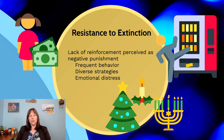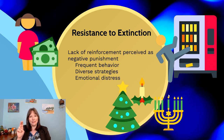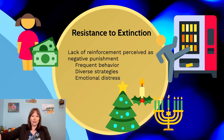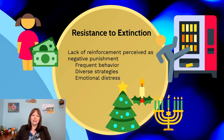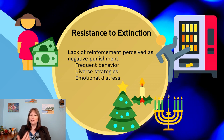In classical conditioning, we simply pair two stimuli, and when we unpair them, the conditioned response goes away. However, in operant conditioning, we're dealing with the consequences of behavior — whether you get reinforced or punished. These are not antecedents but consequences.